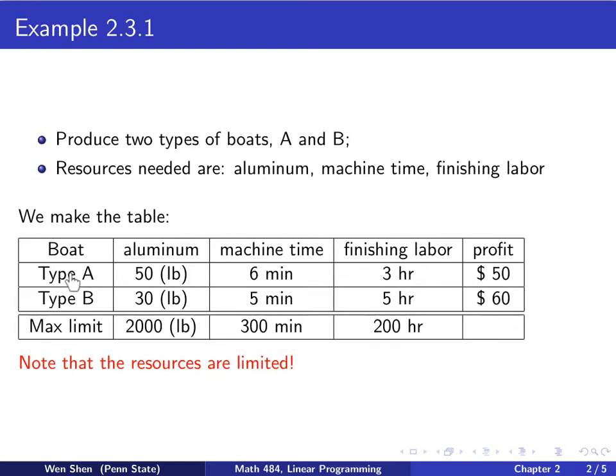All these informations are listed in the following table. Let's go through it. The first column are both types, type A and type B. And the second column is aluminum. So for type A, it takes 50 pounds of aluminum. Type B, 30 pounds of aluminum. And the third column is machine time. Type A boat, each one takes 6 minutes, and type B takes 5 minutes.